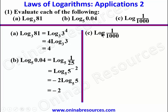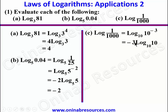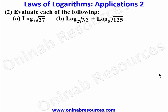For Problem 1c, we have log(1/1000). Since no base is indicated, it is base 10. We express 1/1000 as an index form of 10: since 1000 is 10 to the power 3, we have 1/1000 as 10 to the power of negative 3. Applying the law, this gives negative 3 times log₁₀(10), and since log₁₀(10) is 1, the answer is negative 3. That is the end of Problem 1.